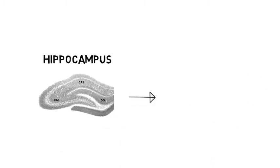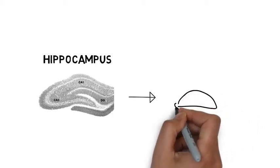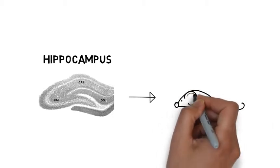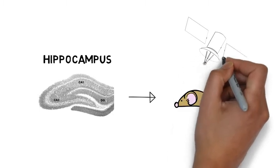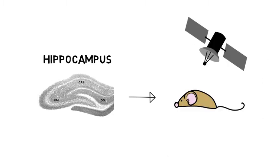Ensembles of these place cells collectively form mental maps of spatial environments, functioning almost like a kind of brain GPS that allows the animal to learn and remember how to navigate different spatial environments.